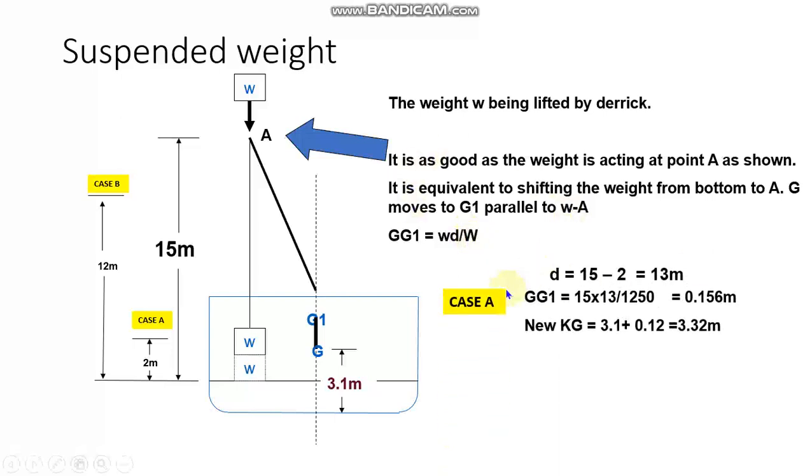So in case A, we can take distance d as the total height of the crane is given to be 15 meters. So 15 minus 2, 13 meters is the distance. So GG1 will be 15 into 13 by 1250, 0.156 meters. So this is GG1. So this is definitely a rise in G because weight is being lifted. So your new KG will be 3.1 plus GG1. So the final answer in case A will be 3.32 meters.